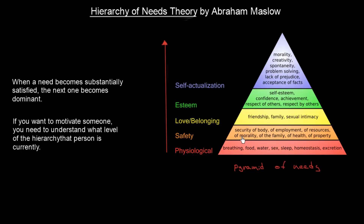The second building block of this pyramid is safety needs — the security of our body, employment, resources, morality, family, health, and property. For instance, these safety needs are not satisfied during war.